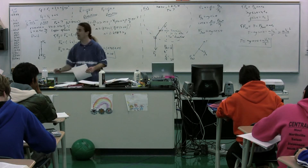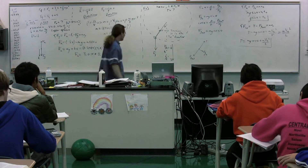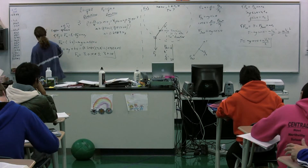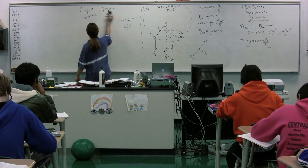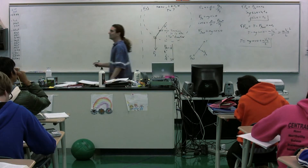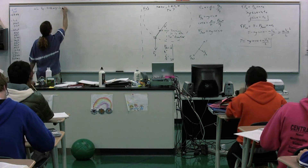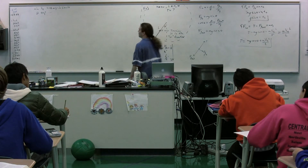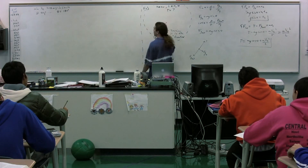The tension is dependent on the angle. How do we figure out the minimum velocity necessary to keep this object moving in a circle? The minimum velocity occurs where the object is most likely to fall — that's at the very top, where theta equals 180 degrees.